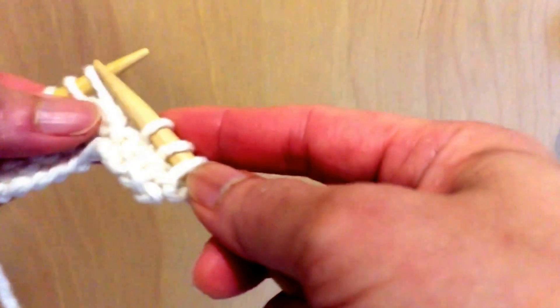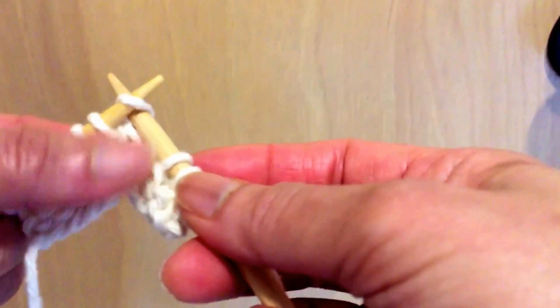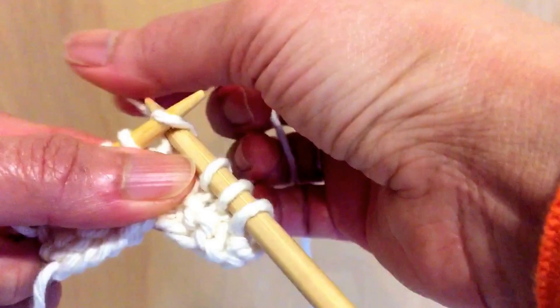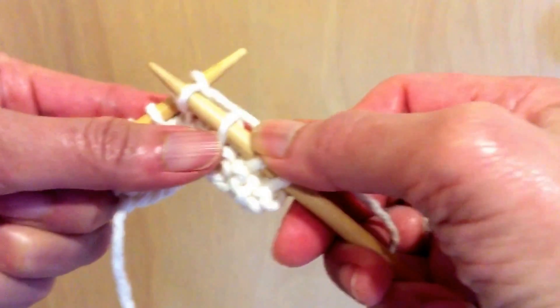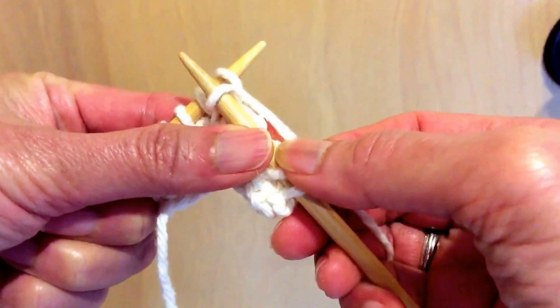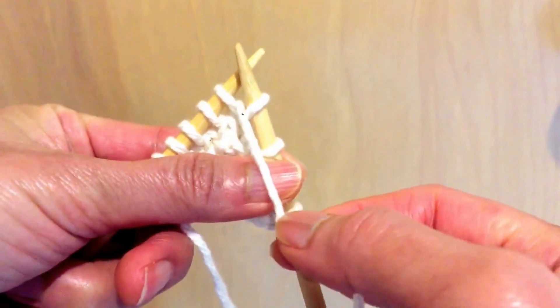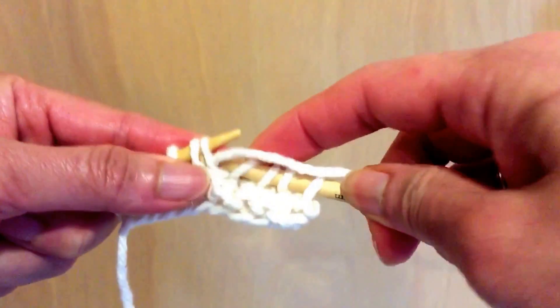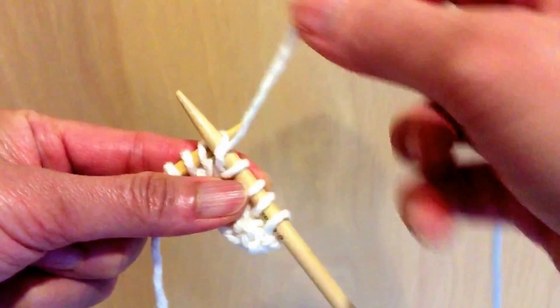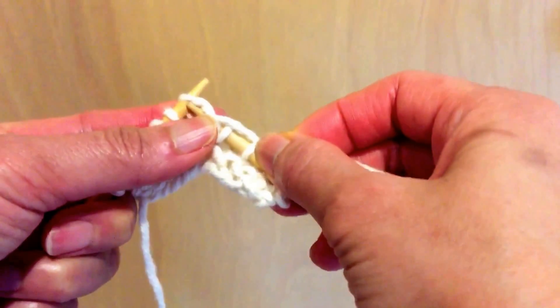So in order to do that, we are going to knit the next stitch and then don't slip the stitch off the needle. You're going to do purl into that stitch by bringing the yarn to the front and then purl it. Purl.